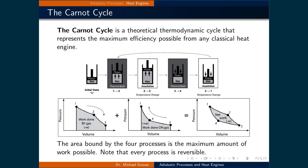Let's now look at one idealized heat engine cycle which represents the maximum efficiency possible for any classical heat engine. It is called the Carnot cycle and it is a process with four steps.